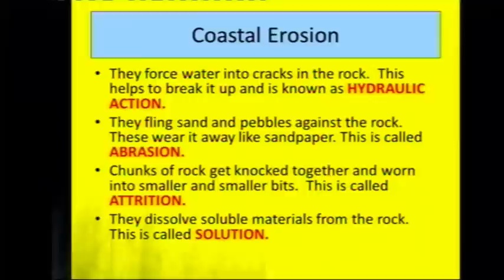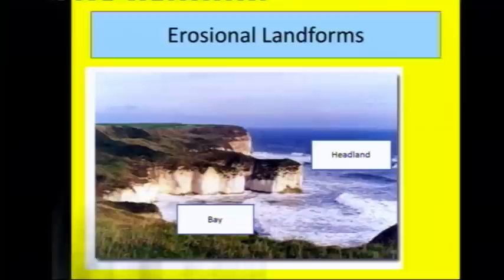There are four processes of coastal erosion, the same as for rivers. Hydraulic action is when water gets into cracks in the rock and helps to break it up. Abrasion is when sand and pebbles in the sea hit against the coast or cliff. Attrition is when small rocks in the sea hit against each other and become smoother and smaller. Finally, solution is when the very small, soluble materials from the rock are dissolved.